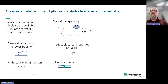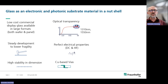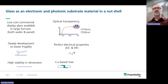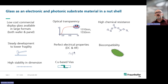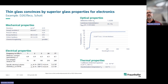Additionally, glass has very nice optical properties. Of course, the optical transparency — in comparison to polymers — gives high transmission over a broad wavelength range, up to the communication wavelengths at 1310 and 1550 nm. On the other hand, we have perfect electrical properties for DC and RF, and we can structure the material with through-substrate interconnects. We also have very high chemical resistance, making it suitable for sensors, harsh environments, and biocompatible applications.